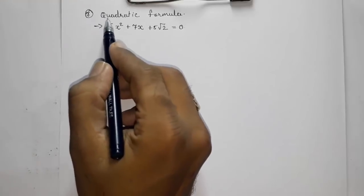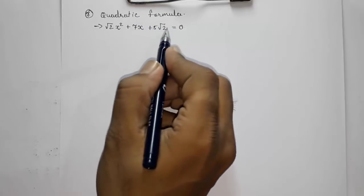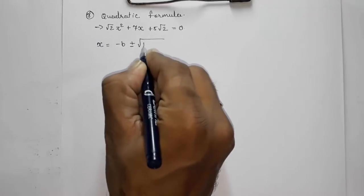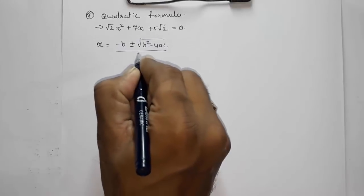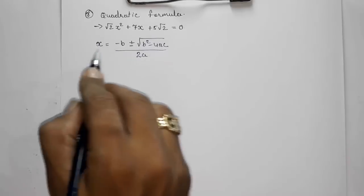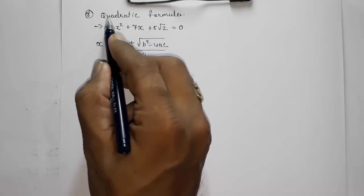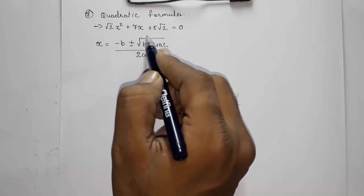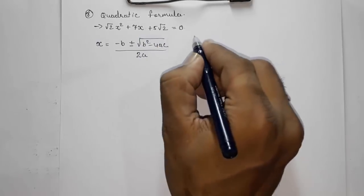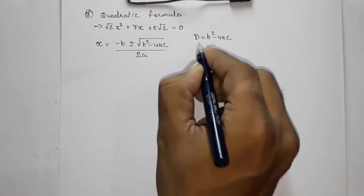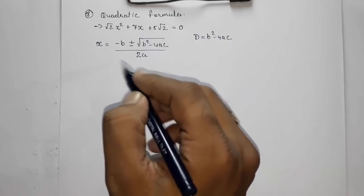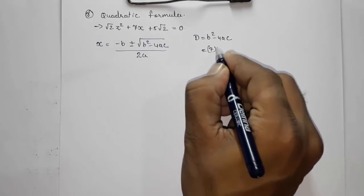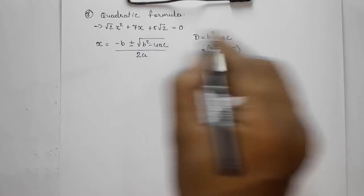Moving to the third method — the quadratic formula. The formula is: x = (−b ± √(b² − 4ac)) / 2a. Before using it, we first find the discriminant D = b² − 4ac. For this example, b = 7, a = √2, c = 5√2, so D = 7² − 4 × √2 × 5√2 = 49 − 4 × 2 × 5 = 49 − 40 = 9.